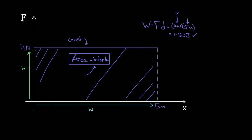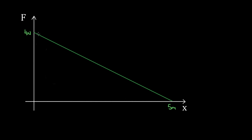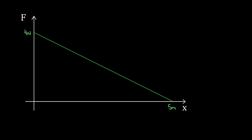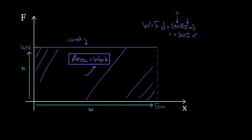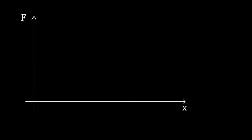Instead of pushing with a constant four Newtons for the entire trip, let's say you started pushing with four Newtons but were getting tired, and your force was diminishing — pushing with a weaker and weaker force until it became zero Newtons when the hamburger reached five meters. How do we find the work done by our force now? The claim is that the work done is still equal to the area underneath this force versus position graph. But you might be skeptical — all we showed previously was that work equals area for a constant force. How do we know it still works for a varying force?